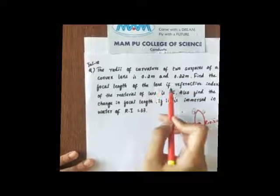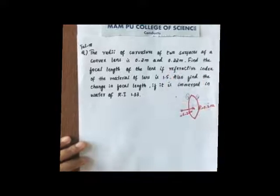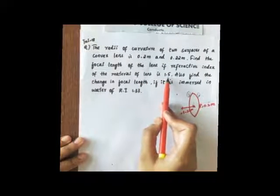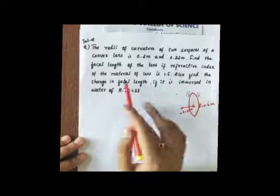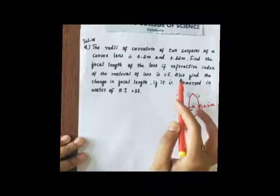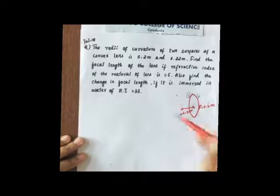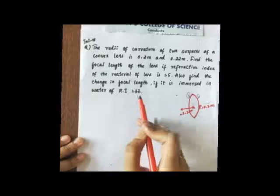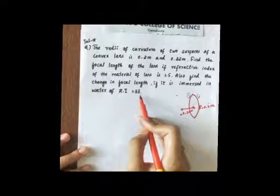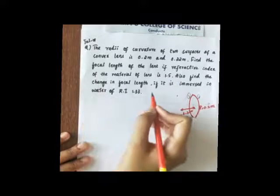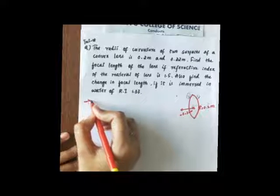Now, you have to find the focal length of the lens if the refractive index of the material of the lens is 1.5. Also, you have to find the change in focal length when the same lens is immersed in water, where the refractive index of water is 1.33. Note that there is no unit for refractive index — it is just a number.